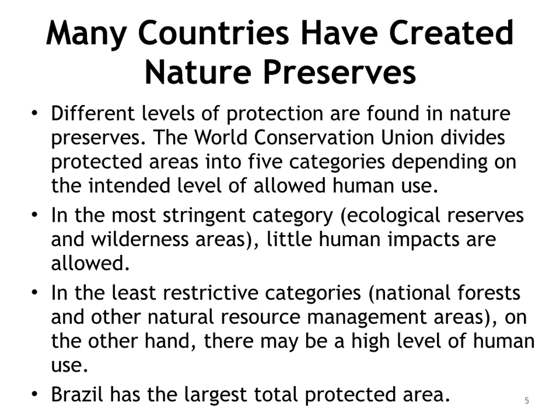In the least restrictive categories — national forests and other natural resource management areas — there may be a high level of human use. The United States has only about 22% of its land area in protected status, and less than one-third of that amount is in IUCN categories one or two: nature reserves, wilderness areas, and national parks. The rest is in national forests or wildlife management zones designated for sustainable use.